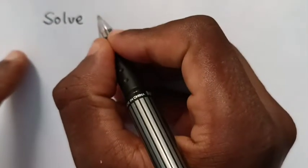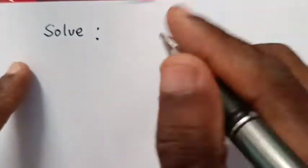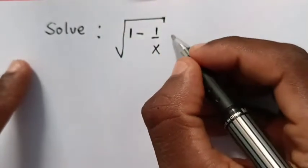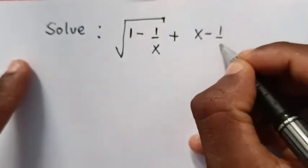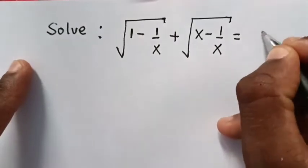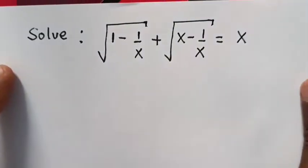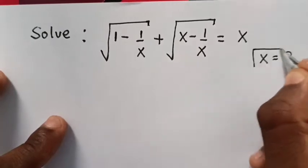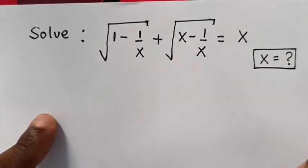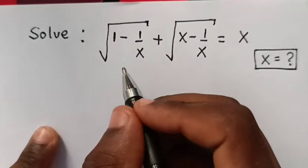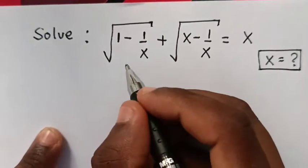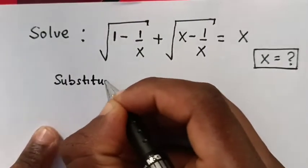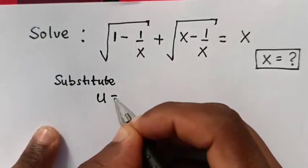Hello, welcome to Learning Communalizer channel. Today we are going to solve this question: square root of 1 minus 1 over x, plus square root of x minus 1 over x, is equals to x. We are asked to solve for x. Please like the video and subscribe. Let's start.